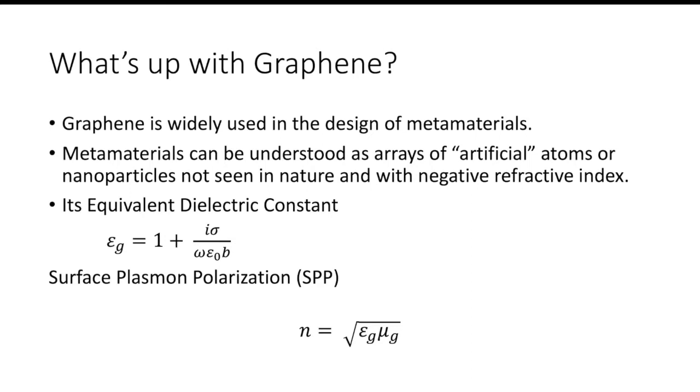Not seen in nature and with negative refractive indices. Graphene is an extremely thin material and we can think of it as an ultra thin film which has a certain equivalent dielectric constant epsilon_g = 1 + i*sigma/(omega*epsilon_0*b), where epsilon_0 and omega respectively represent the dielectric constant of the vacuum and the frequency of the incident wave, with b representing the thickness of graphene.